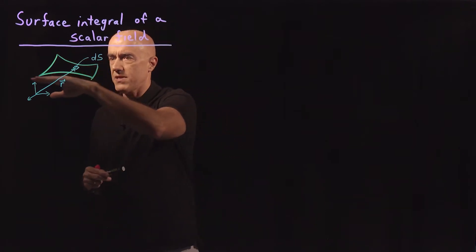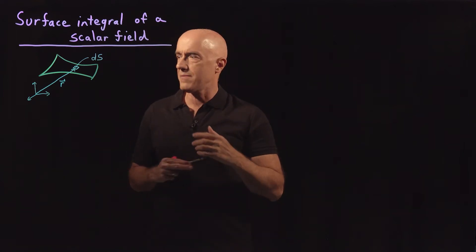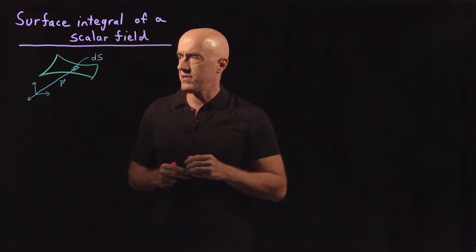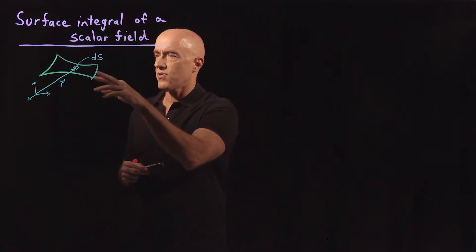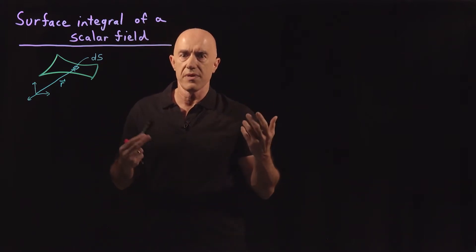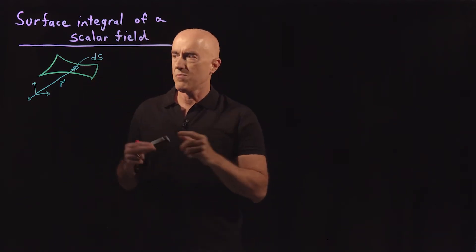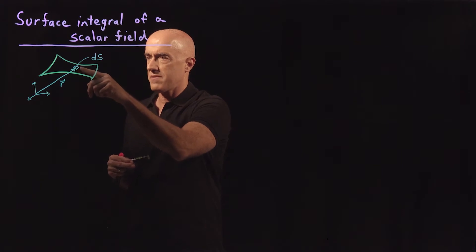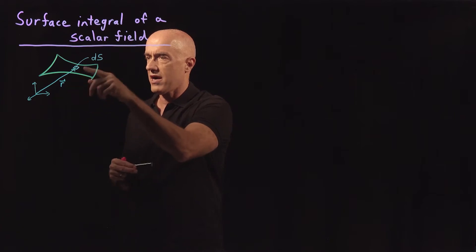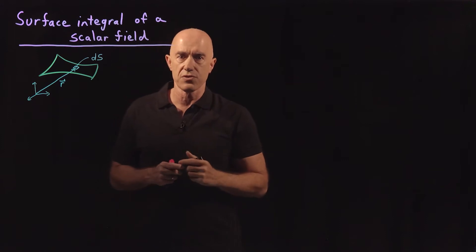We have some surface in three dimensions. The surface itself is a two-dimensional object. We have a scalar field defined on the surface. The surface integral of the scalar field will be obtained by a Riemann sum, where we break the surface into small surface elements ds. We multiply each element by the average value of the scalar field, say F of R, on that surface element. Then we sum over all of those surface elements.